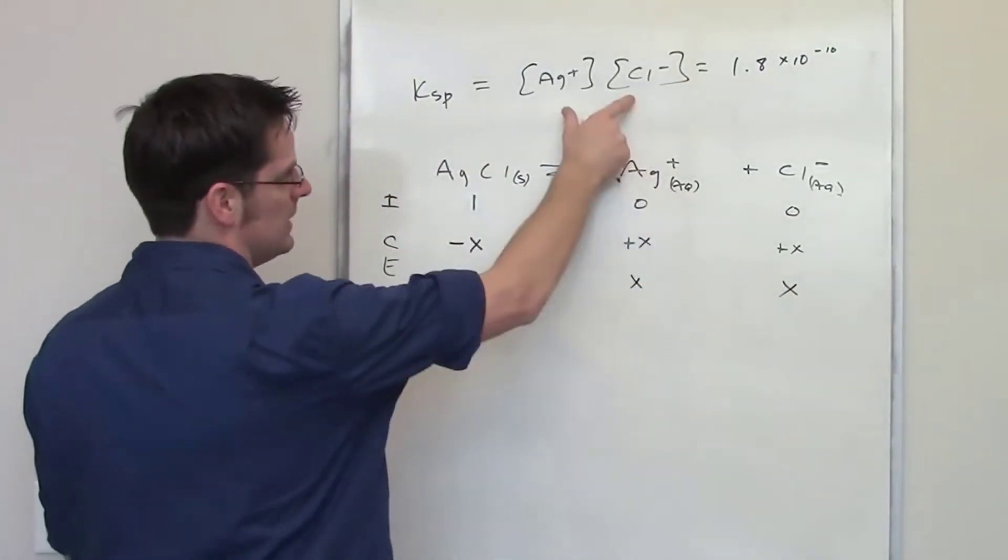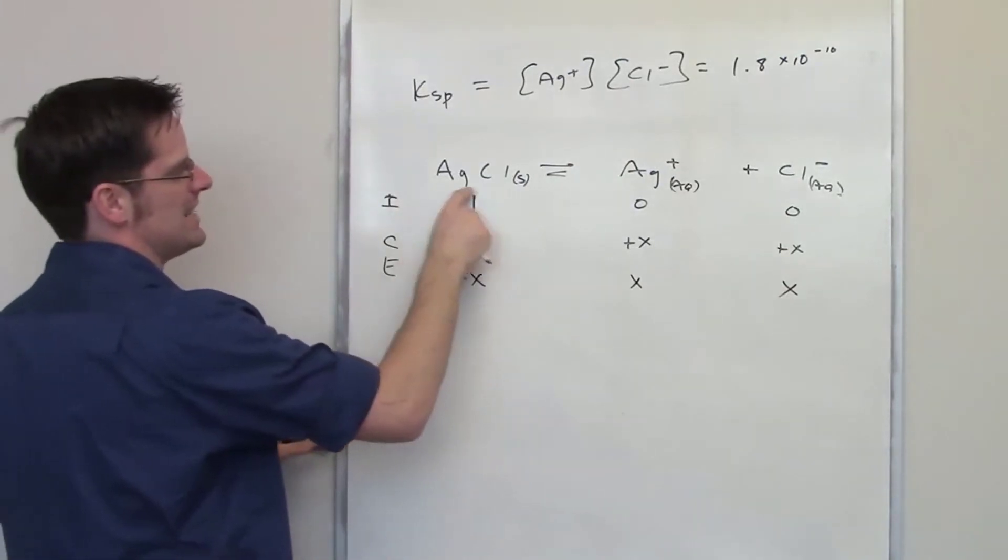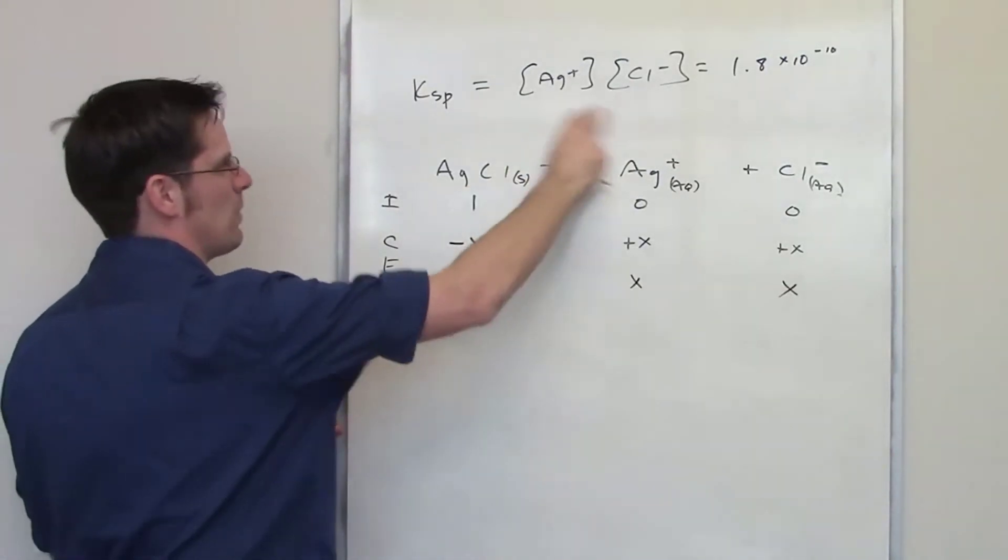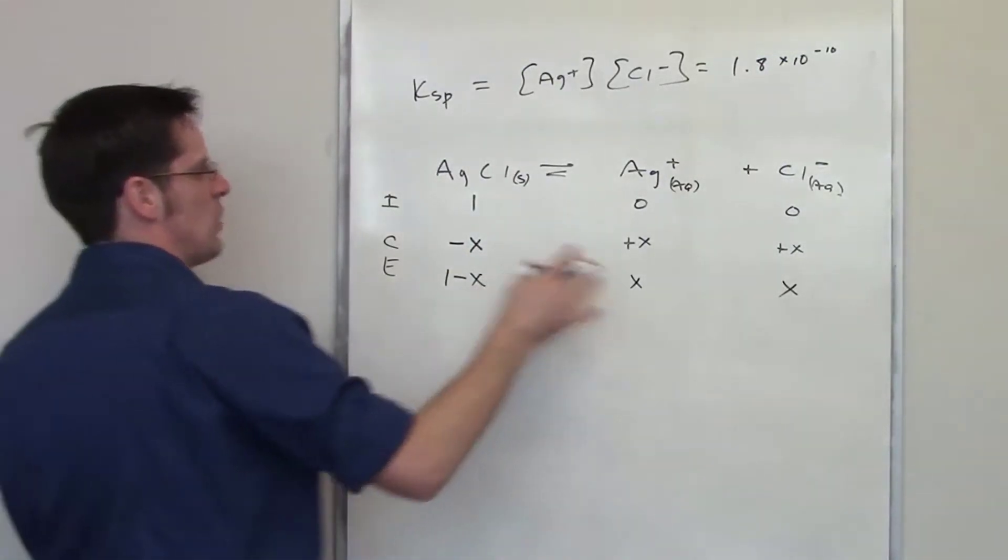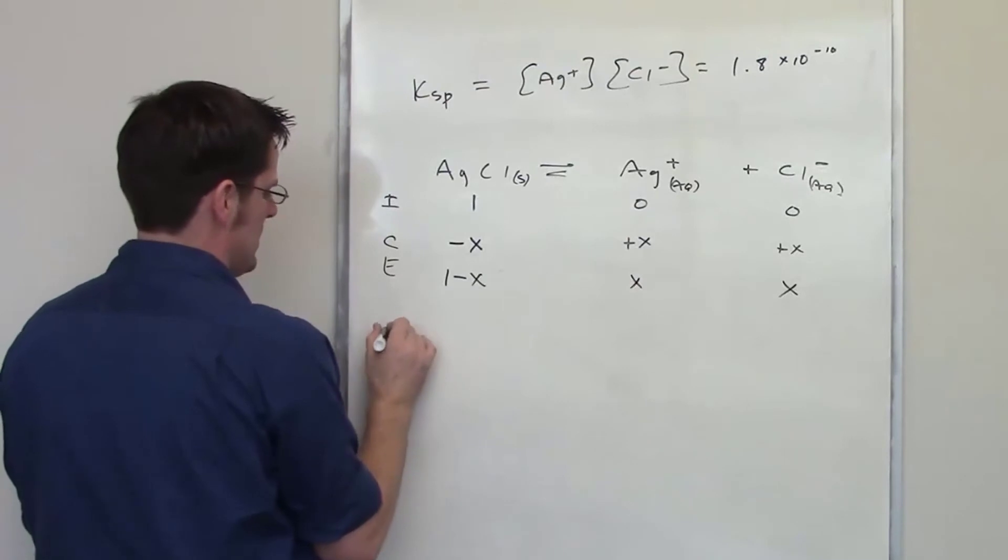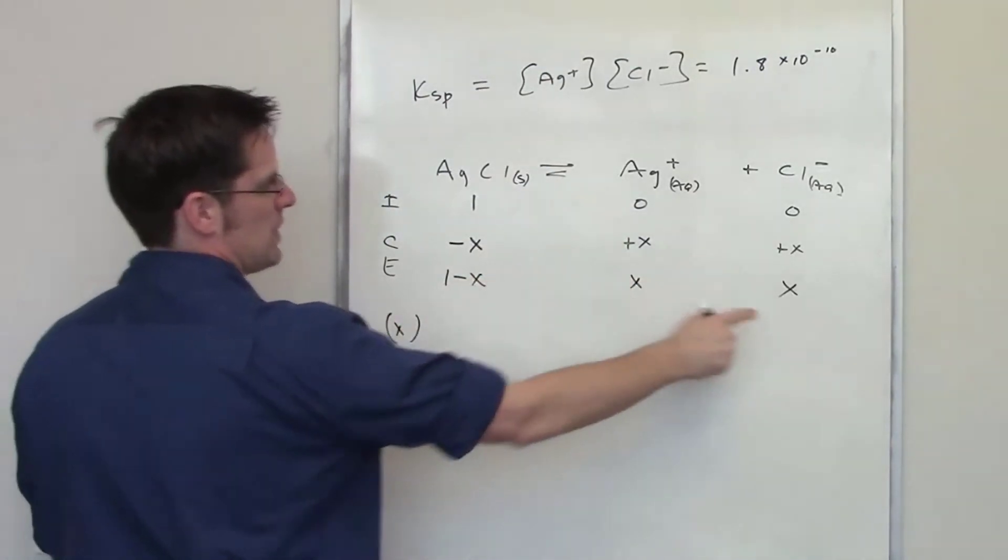Now I can take these values and throw them into their corresponding locations here. Notice that the identity of this value right here as silver chloride doesn't appear anywhere in the Ksp, so it doesn't matter. So we're going to go ahead and throw this thing over here. I've got x for my silver concentration.